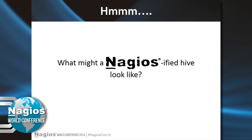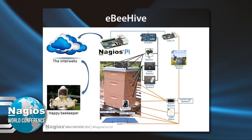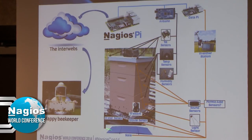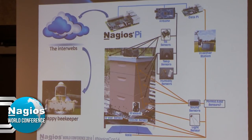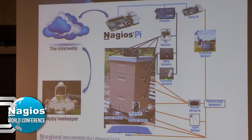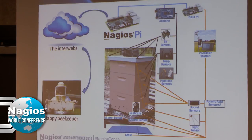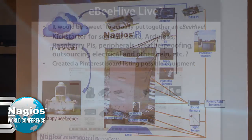So what might a Nagios-ified hive look like? We have the scale — again, the most important thing. A mouse sensor, water sensor, possibly a webcam. This is attached to the Data Raspberry Pi. Also a weather station and things like that. The Arduino would take care of tilt sensors, temp sensors, and humidity. All these things would feed into a Nagios Pi, through the interwebs, and to the happy beekeeper. Obviously what's not on here is power — do I need solar? Any ideas and suggestions would be great.